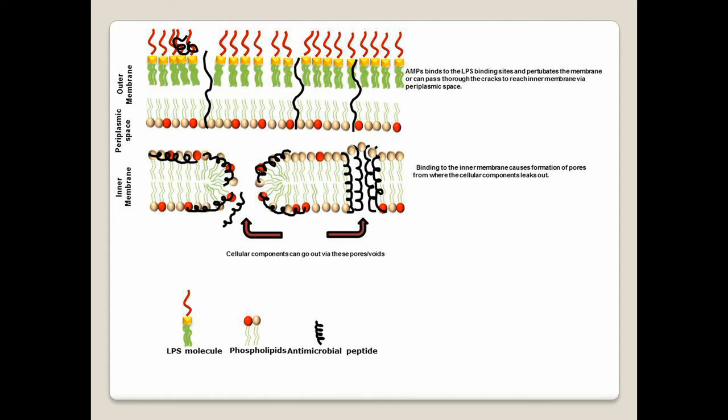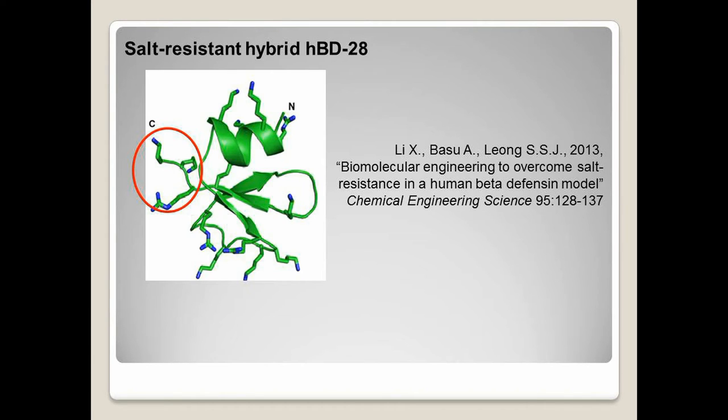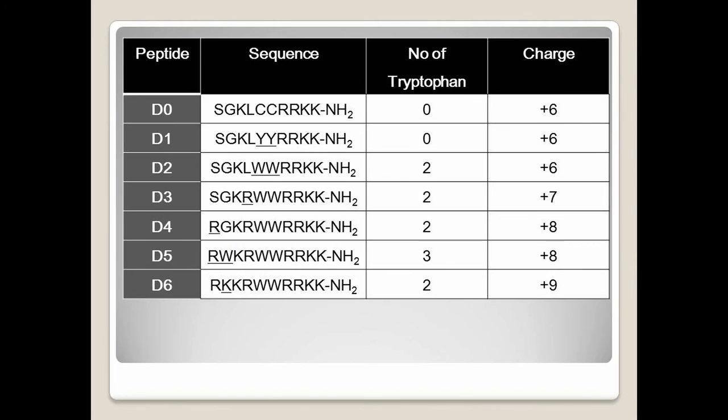The parent peptide from which we engineered the 10-mer peptide derivatives is the C-terminus of a human beta-defensin-28 variant, which our group previously engineered for salt-resistant properties. Systematic amino acid substitution of the 10-residue peptides with tryptophan and arginine residues was performed to determine the optimal hydrophobic to charge ratio that is required for broad-spectrum and salt-resistant antibacterial activity.